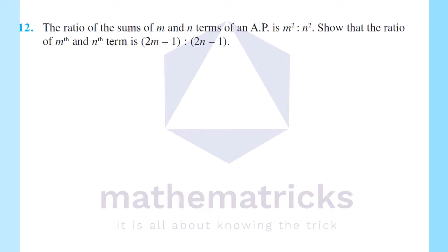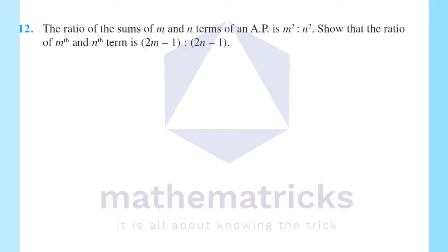The ratio of the sums of m and n terms of an AP is m squared to n squared. Show that the ratio of the mth and nth terms is 2m minus 1 to 2n minus 1.